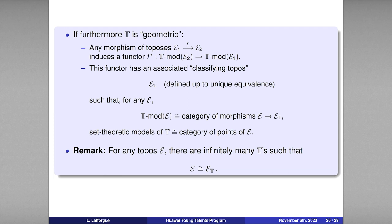A very important remark is that for any topos, there are infinitely many theories which define the same topos. This is a kind of duality between language and meaning — or between freedom and truth. The topos incarnates truth, but there is freedom in the way to speak about truth. There are infinitely many languages which allow talking about the same truth.